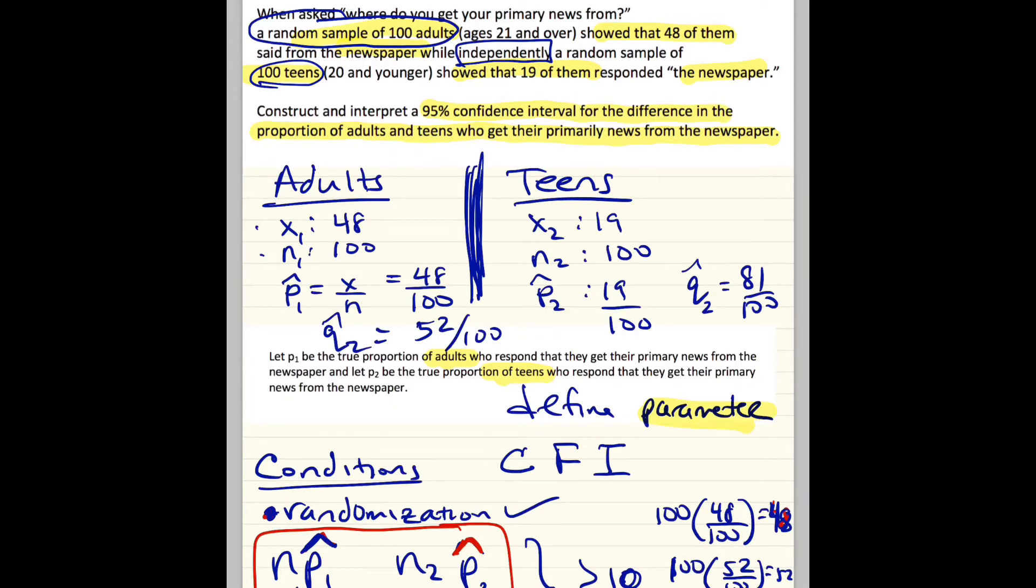Second, N P-hat 1, N Q-hat 1, N2 P-hat 2, N2 Q-hat 2. All of these have to be greater than 10, not 30. This is a proportion. N, 100. P-hat 1, 48 out of 100. Remember, P-hat is a fraction.